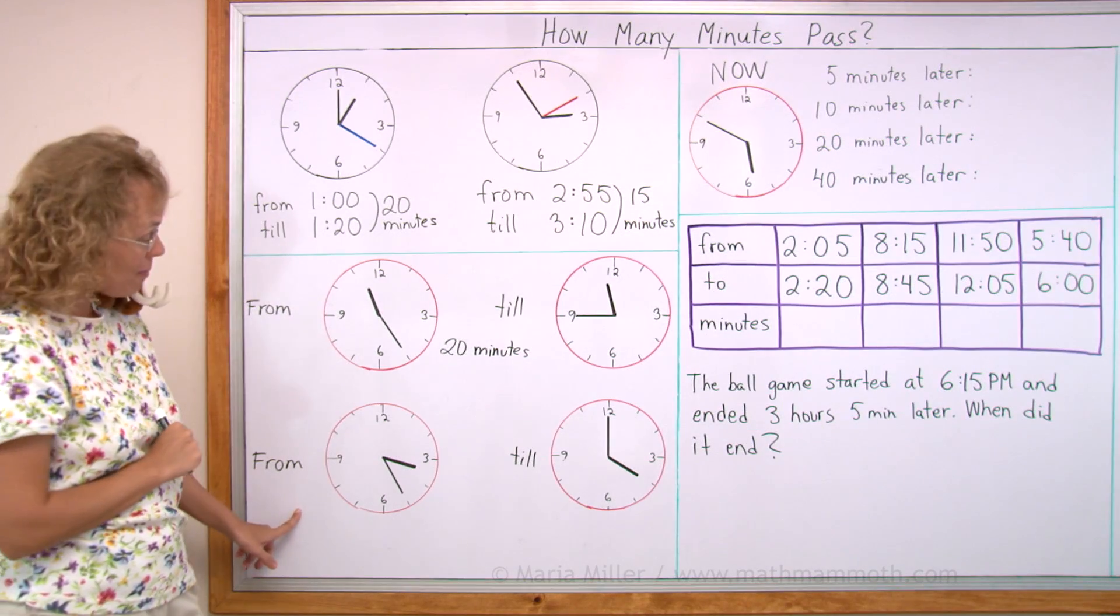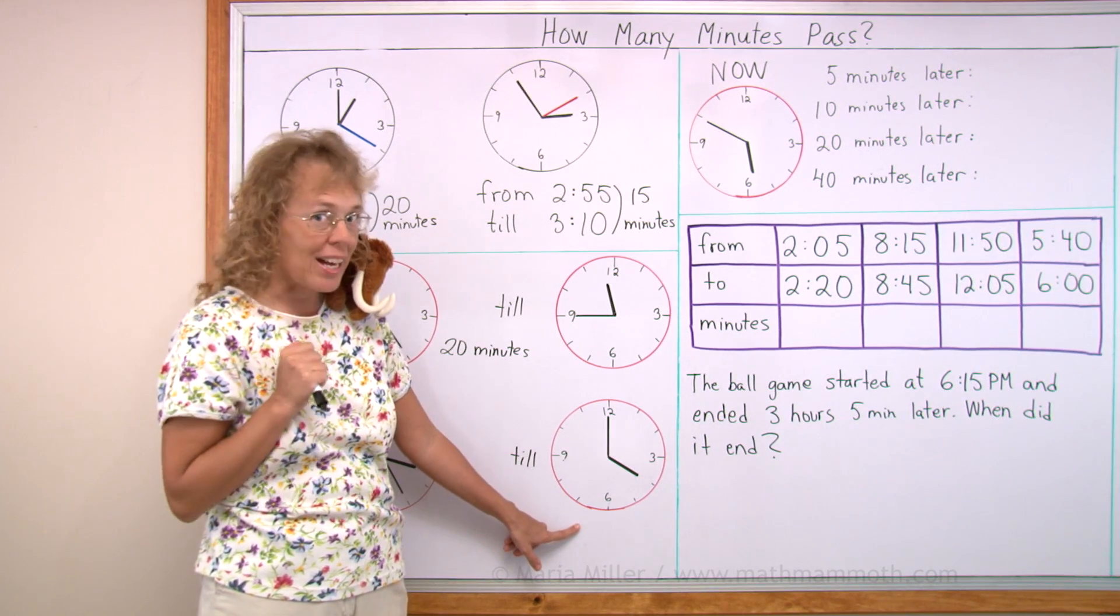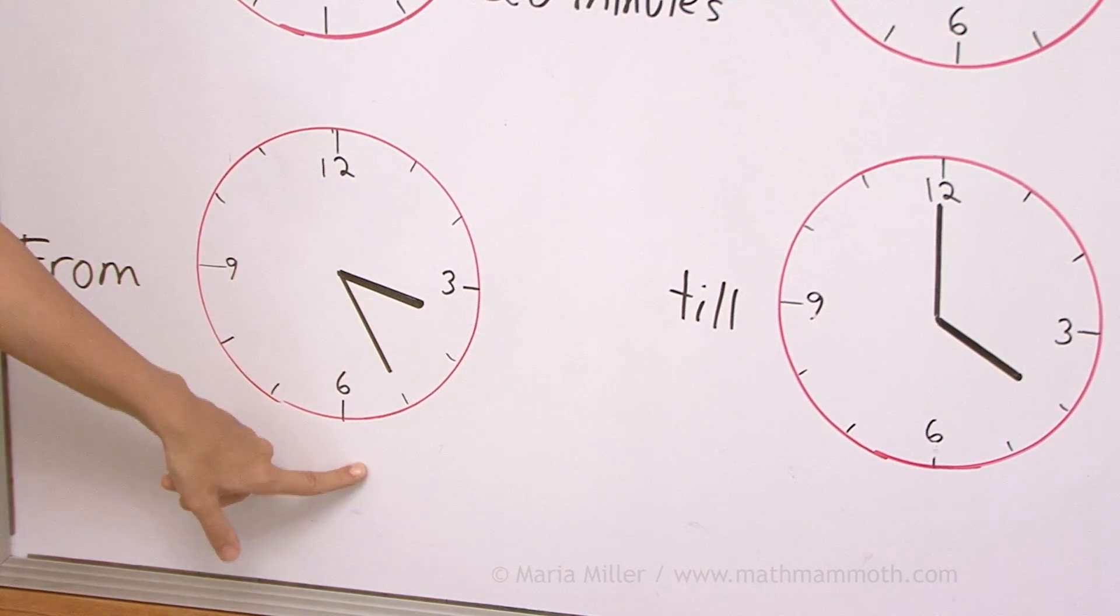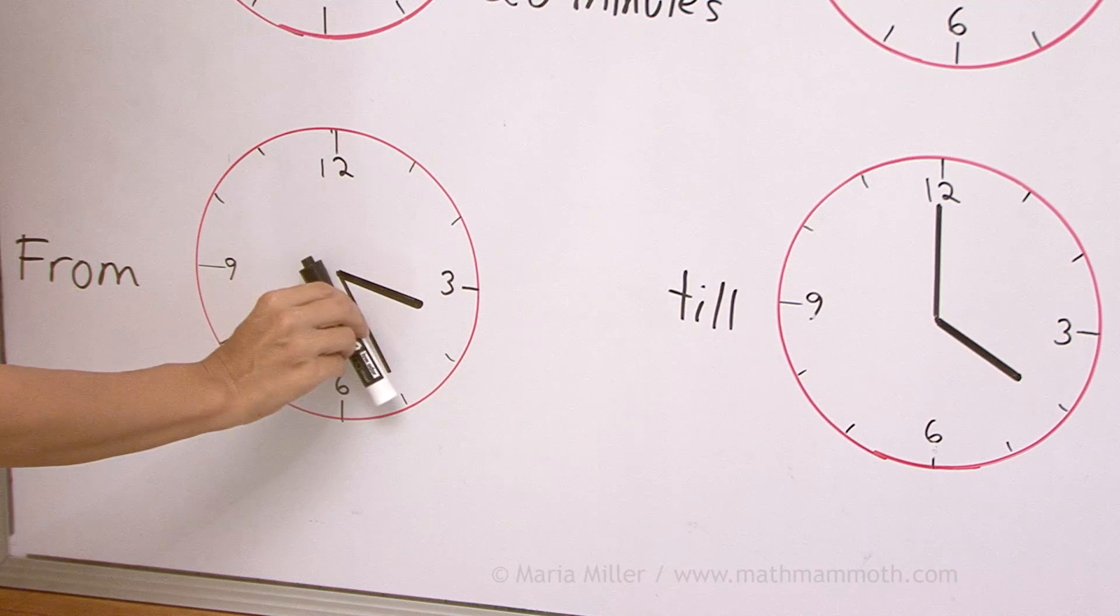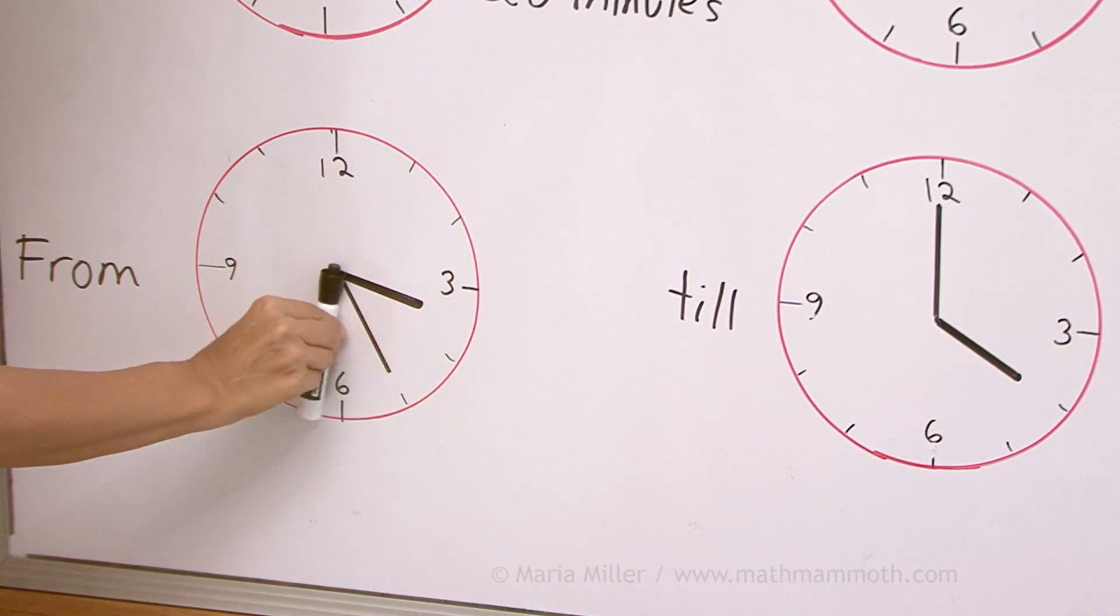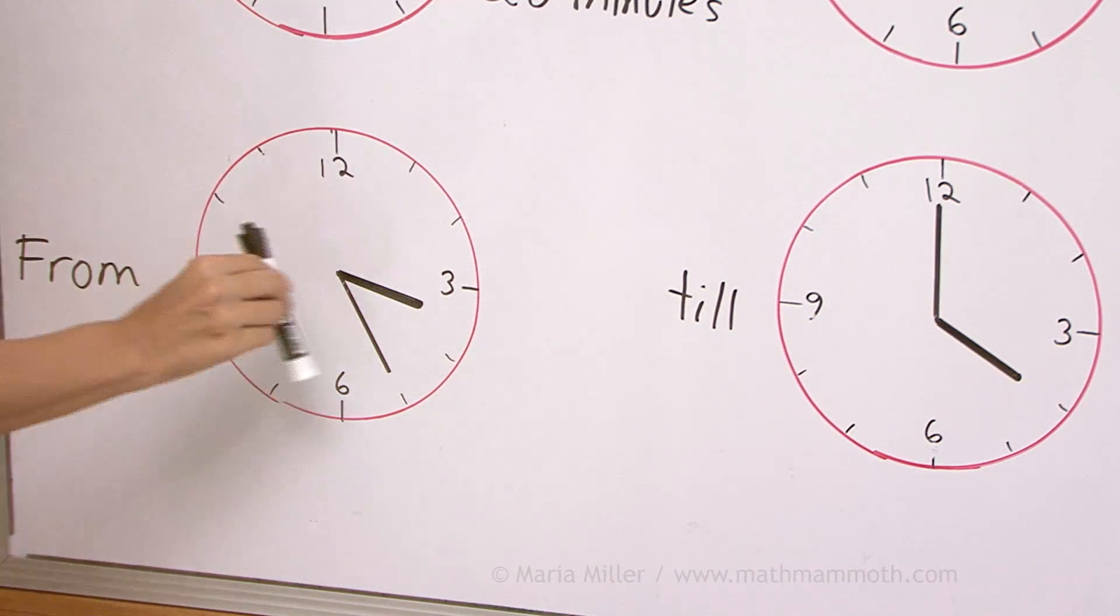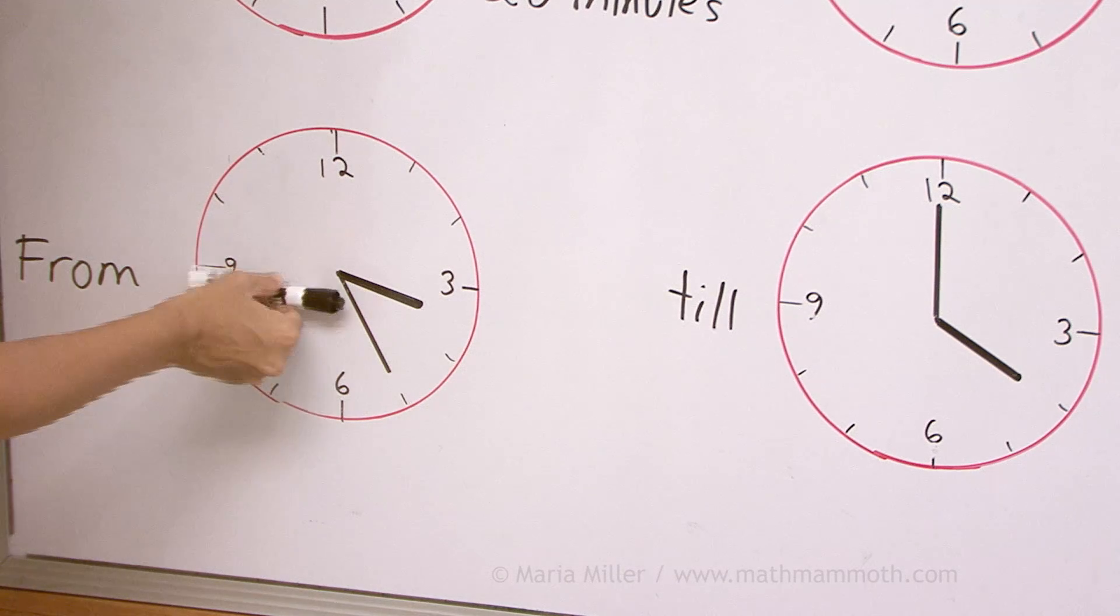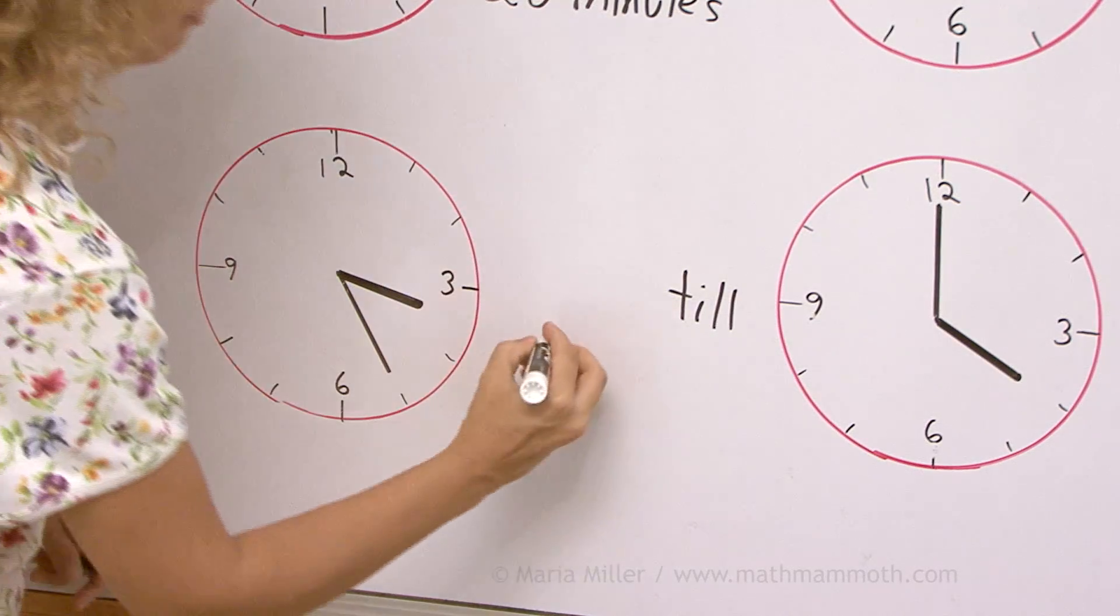Can you figure out this one? From this time till this time, how many minutes pass? Here we have 3:25, and here 4 o'clock. You can take the minute hand and you could move it. It would move all the way up here till it's 4 o'clock. From here to here is 5 minutes, and then we have half an hour or 30 minutes, right? 5 minutes and 30 minutes, so a total of 35 minutes.